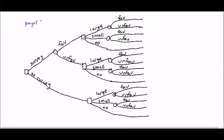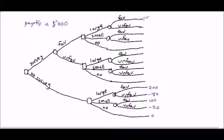We enter the payoffs. Suppose the payoffs are in thousands of dollars. The payoffs obtained when following the branch no survey are the same payoffs as in the previous video, because in the previous video no mention was made about conducting a survey. We fill in the payoffs obtained after conducting the survey. Since the cost of the survey is $10,000, we have to deduct $10,000 from each payoff.